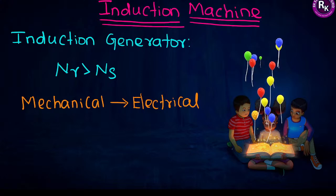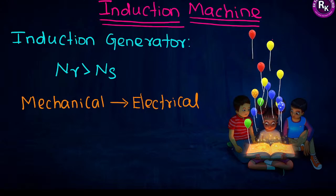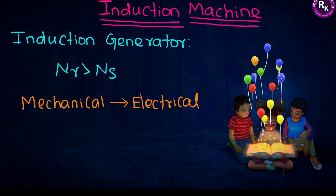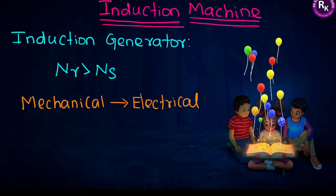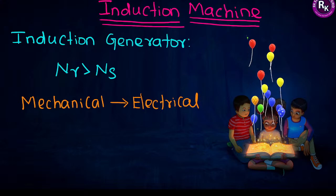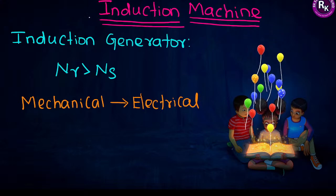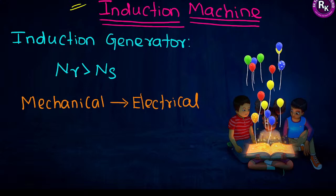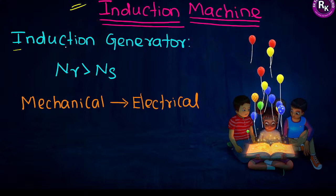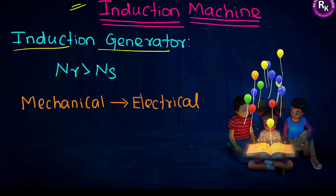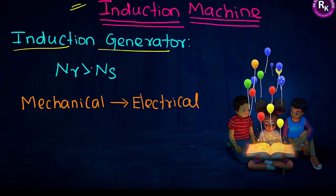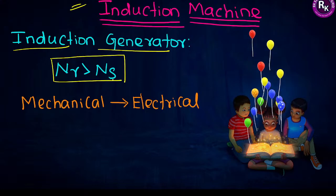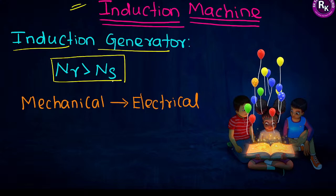We have now completed the transformer topic entirely — single-phase transformer, auto transformer, three-phase transformer. The next topic is induction machine. Induction machines are classified into two types: induction generator and induction motor. In an induction machine, there are two different speeds: synchronous speed (Ns) and rotor speed (Nr). Synchronous speed is the speed of the rotating magnetic field existing between the stator and rotor.